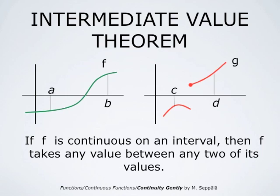To summarize: a function is continuous at a point if its value agrees with its limit value at that point. If a function is continuous at all points of an interval, then it is continuous on that interval. Continuous functions have the very important intermediate value theorem property: if f is continuous on an interval, then f takes any value between any two of its values.